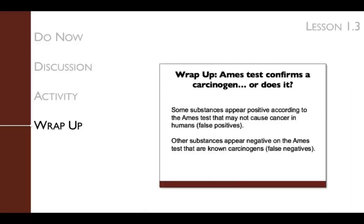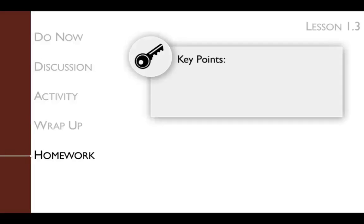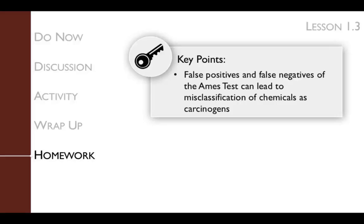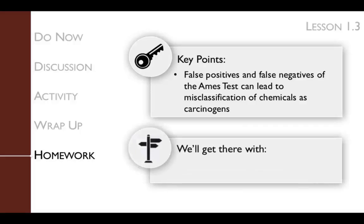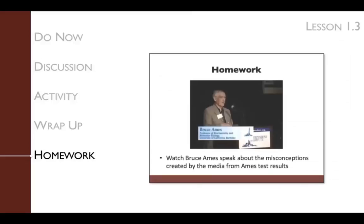In the wrap-up, we discuss how the Ames test can lead to false positive and false negative results, and we also touch on alternative methods for identifying potential carcinogens. The key point of the homework is that false positives and false negatives of the Ames test can lead to misclassification of chemicals as carcinogens. We will get there by watching the Bruce Ames video.